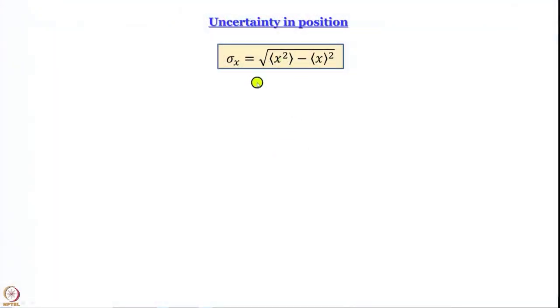Uncertainty in position, by the definition we have just constructed, is the square root of the difference between the mean square position and the square of the mean position. Of these two quantities we know one already: the mean position ⟨x⟩ for particle in a box is L/2, established previously. Now let us work out the average value of x² — that will take a little time. We are going to use integration by parts and will show every step carefully.